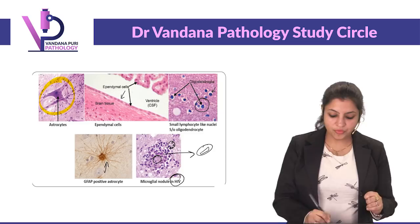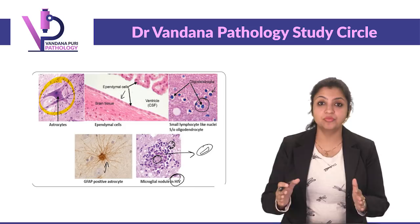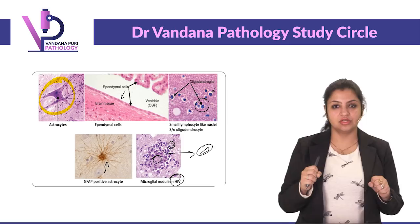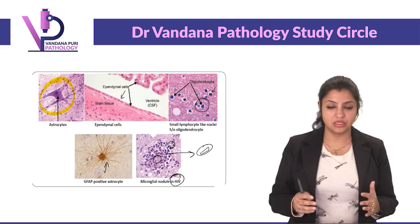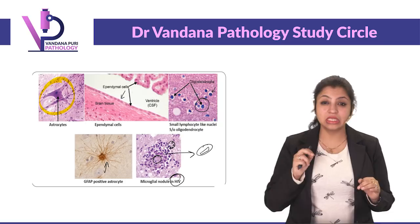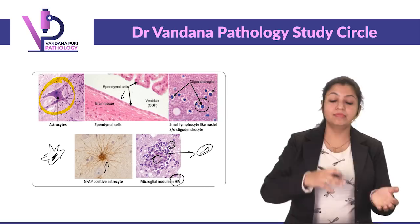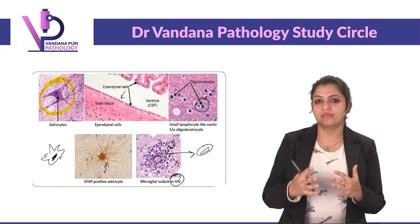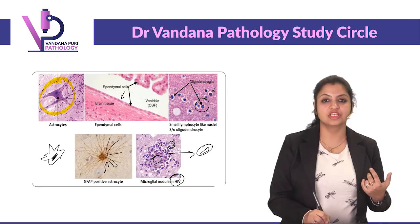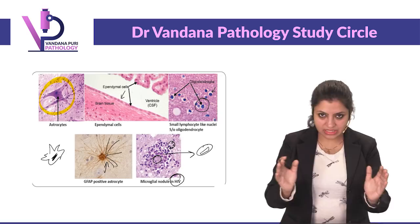All glial cells are positive for GFAP. The strongest positivity of GFAP is given by astrocytes, because they are the ones who respond maximally to injury. When astrocytes are injured or irritated, they cluster the GFAP together. GFAP-positive astrocytes are star-shaped, and you can see the star-shaped projections coming out.